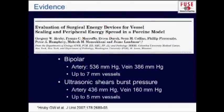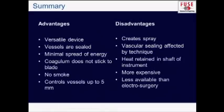Looking at papers comparing bipolar devices to ultrasonic shears: the vessels you can divide with advanced bipolar devices are a little bit bigger — you can generally go up to about 7mm vessels with the bipolar device, whereas you're limited to about 5mm vessels with the ultrasonic shears. In terms of burst pressures, there are slightly higher burst pressures with the bipolar devices than with the ultrasonic, but you should be good unless your patient has a blood pressure above 436. To summarize: ultrasound is a versatile device — you can seal vessels, there's minimal spread of energy, coagulum doesn't generally stick too much to the blade, no smoke, and it controls vessels up to 5mm, but it will create spray. It's affected by your technique, there's heat retained in the shaft, it's more expensive than monopolar electrosurgery, and it's generally less available. Thank you very much.